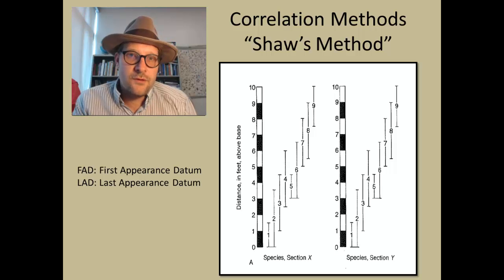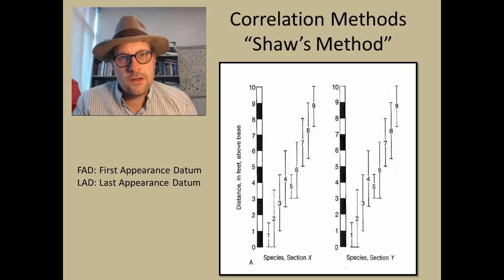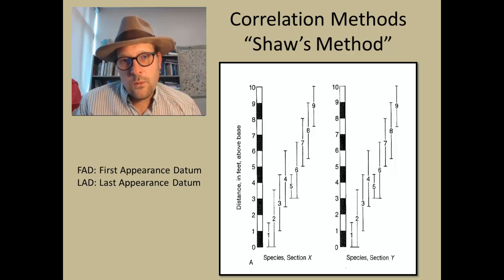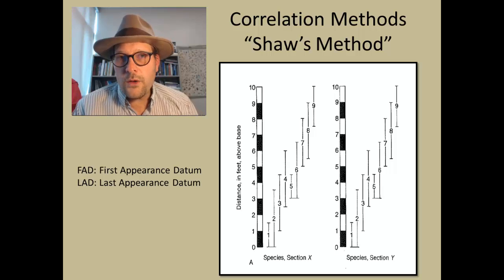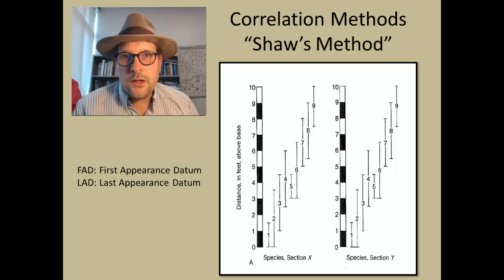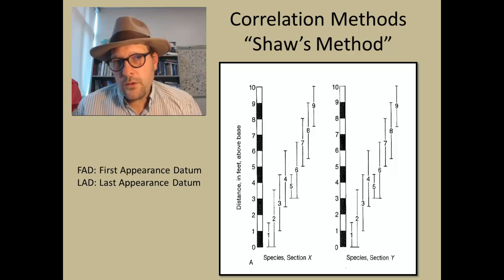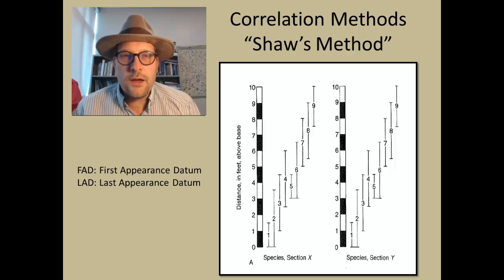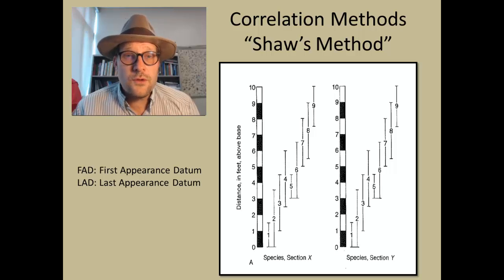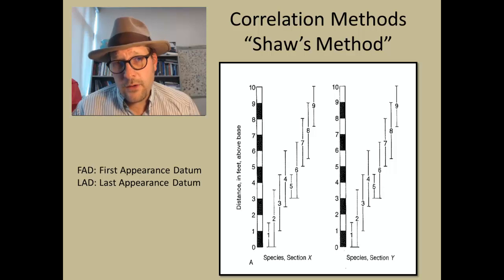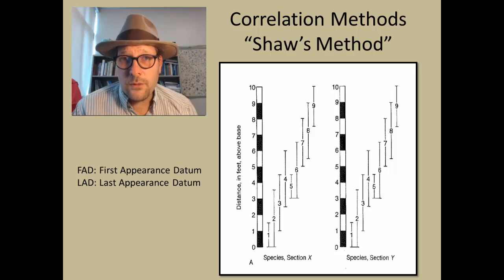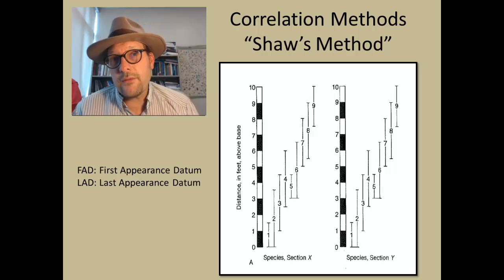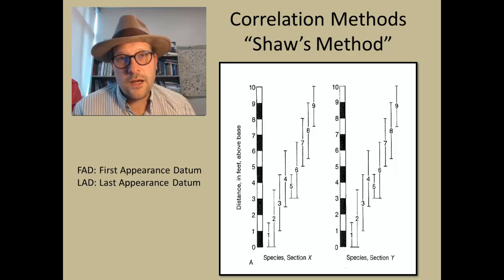Now I am going to talk about how you can date rocks using fossils, using a technique called the Graphic Correlation Method, or Shaw's Method. It is a very cool way of comparing one stratigraphic column to another. This is very important when there is a well-defined type section and you want to compare it with your own section — for example, comparing the Jurassic record here in Utah with the record defined on the Jura Mountains in Switzerland.